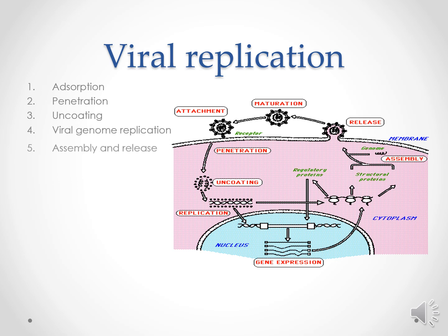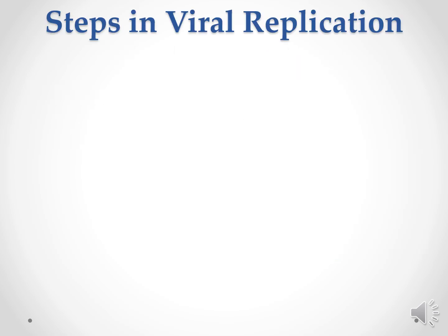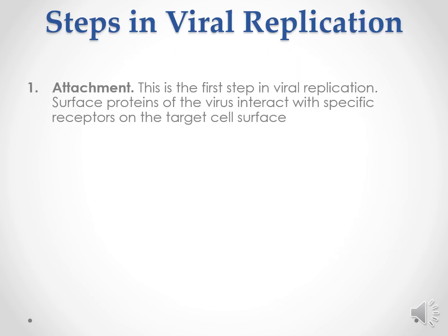The viral replication cycle starts with adsorption, then penetration, uncoating, viral genome replication, assembly of the virus particles, and release. The first step is attachment, which is the first step of viral replication. The surface protein of the virus reacts with the specific receptors of the target cell surface.